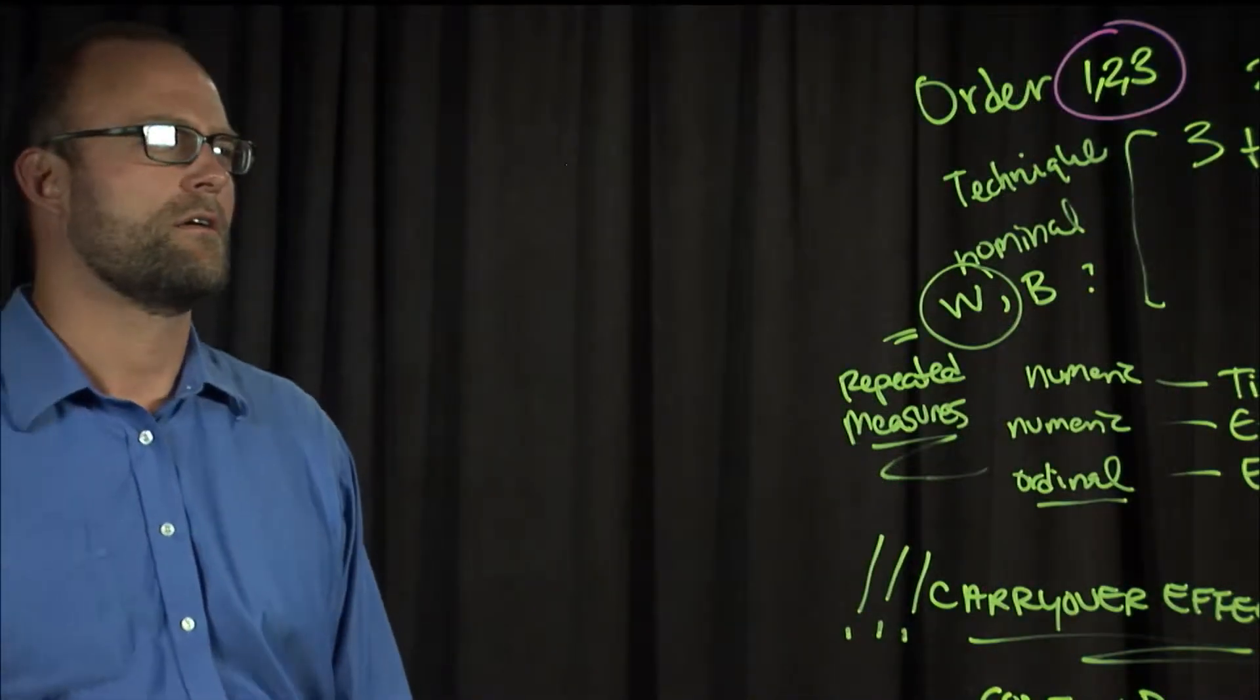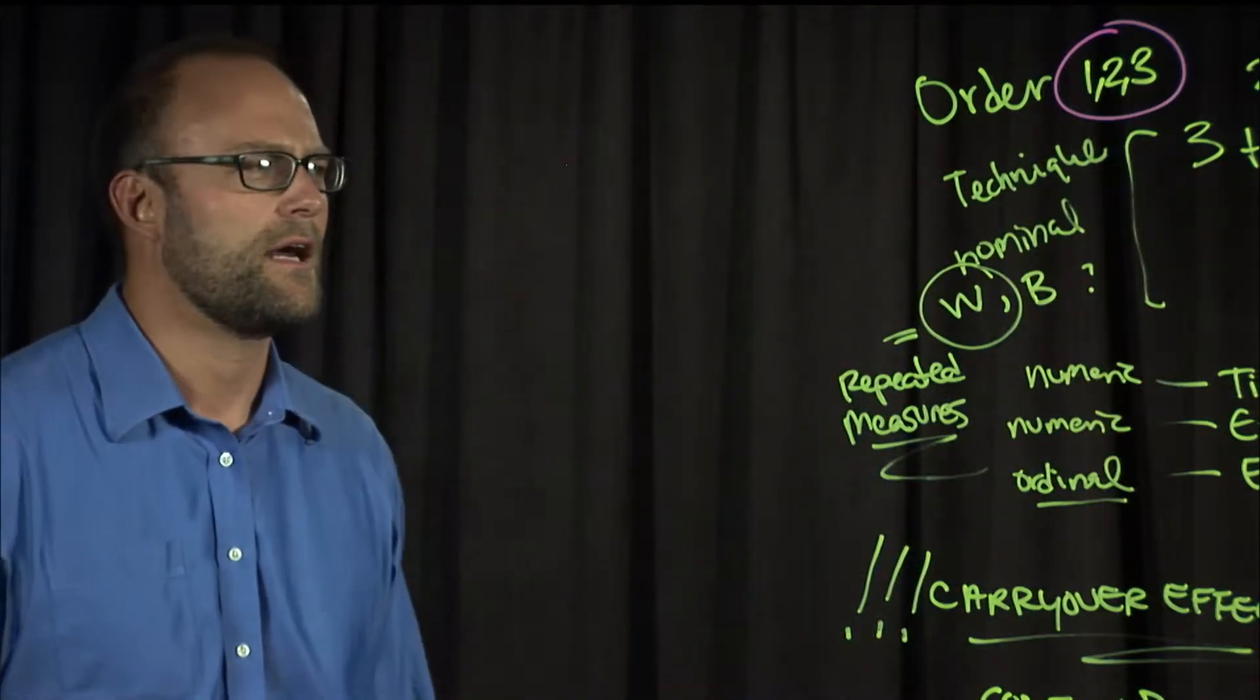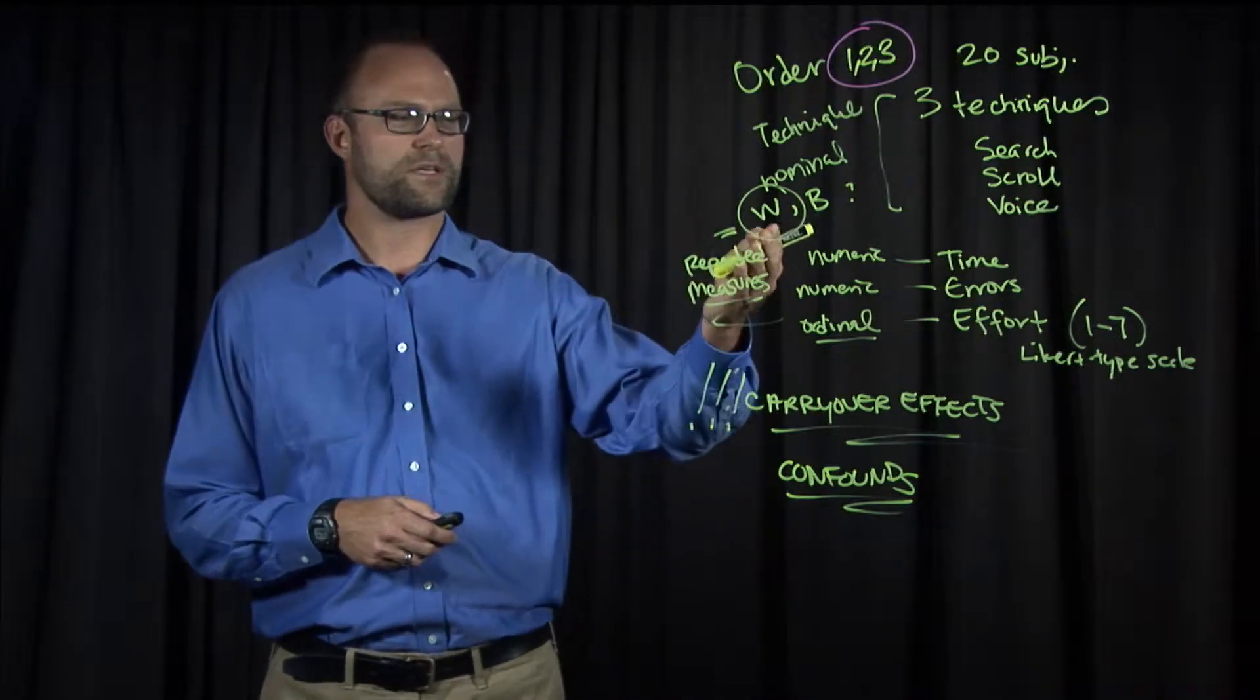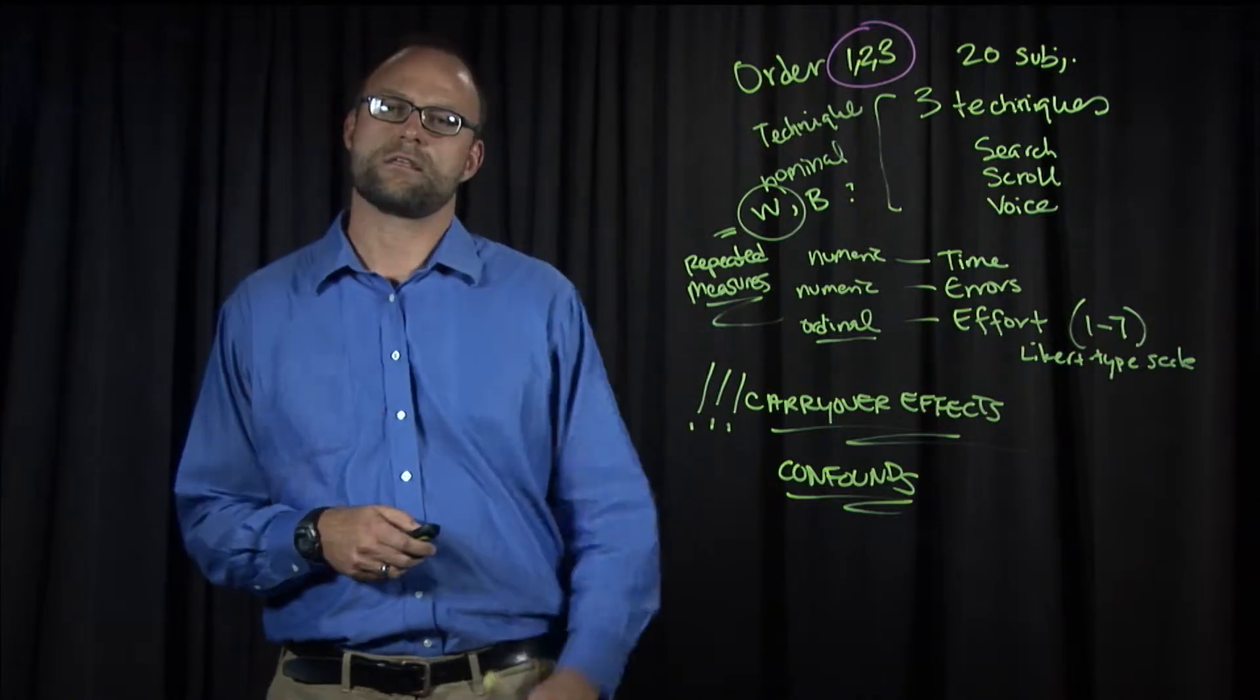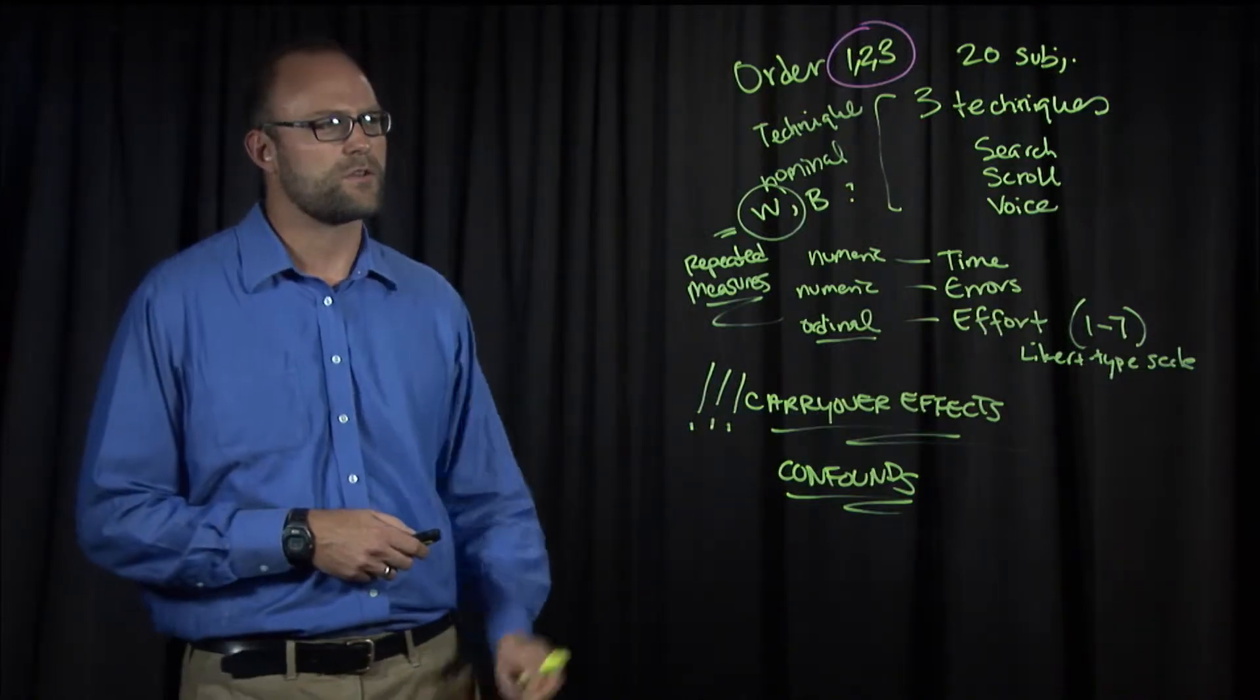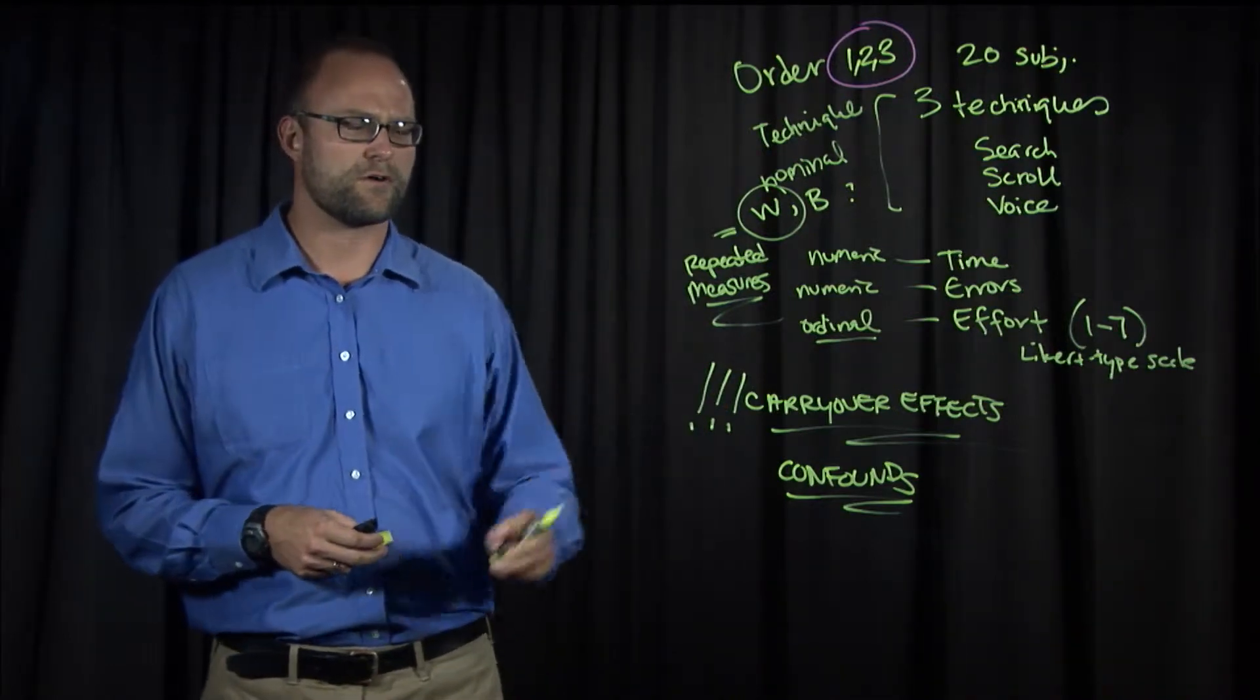We've been discussing schemes for how we would assign the presentation order of techniques in our study to avoid carryover effects that introduce confounds to our results. The study we're considering is a within-subjects design, where subjects use three different techniques to find contacts in a smartphone contacts manager, and we measure the time it takes, the errors they make, and the effort rating they give each technique. Let's talk about how we assign order of presentation more generally, and how that helps us avoid confounds due to carryover effects.